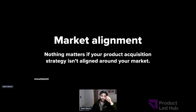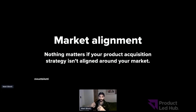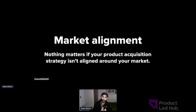Let's start with the first core strategy: market alignment. This is so critically important because nothing else matters if your product acquisition strategy doesn't align to the market. You need to think about which strategies you're going to use because they work in the type of market you're operating in. For example, you can't really use a viral loop or referral strategy if you're building a company that is selling products for companies that are only 1,000 people or more — you're going to have a sales motion for that type of thing.